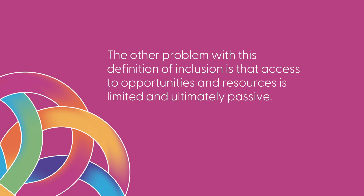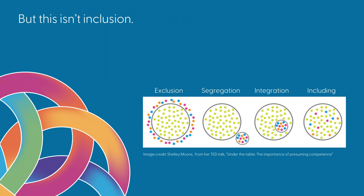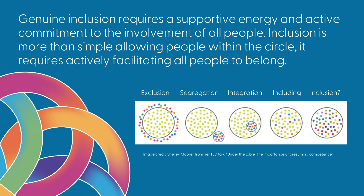The other problem with this definition of inclusion is that access to opportunities and resources is limited and ultimately passive. This is how that kind of inclusion is often visualised. But this isn't inclusion. This vision of inclusion is actually a vision of simply not having barriers that exclude. It captures the action of including, but not the genuine achievement of inclusion. Genuine inclusion requires a supportive energy and active commitment to the involvement of all people. Inclusion is more than simply allowing people within the circle.